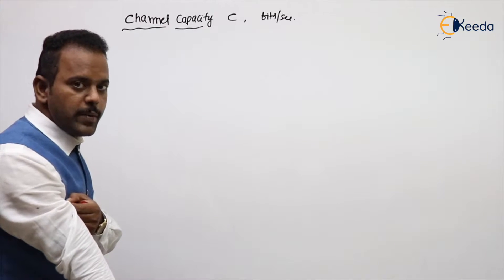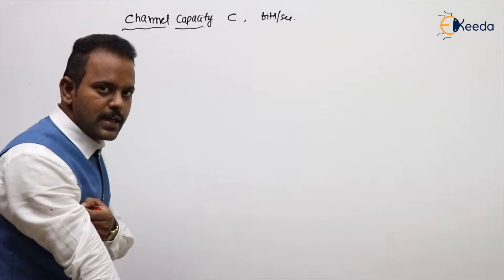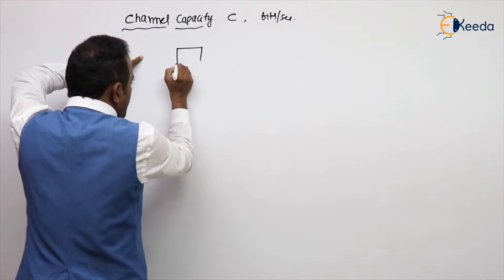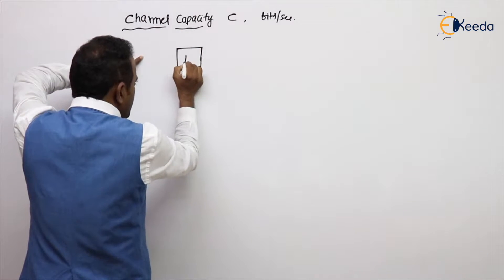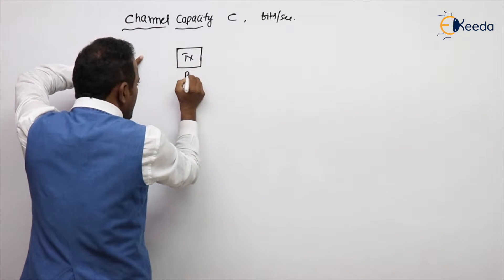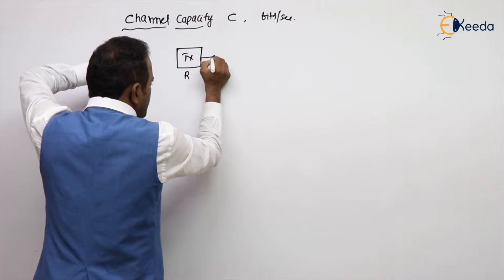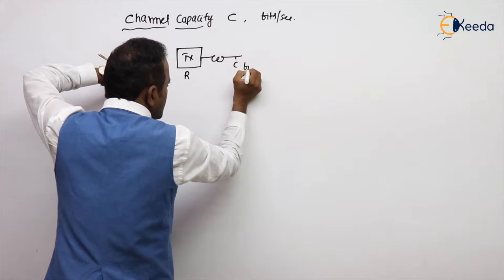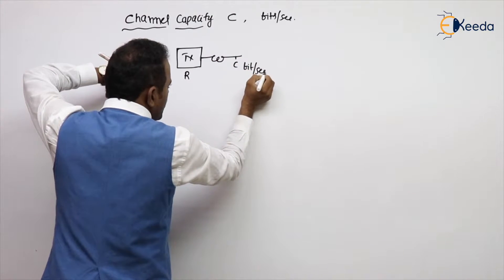In the previous video we saw information rate, also in units of bit per second. What is the difference? Information rate is the number of bits generated by transmitter per second. The number of bits carried by channel per second is given by the channel capacity.